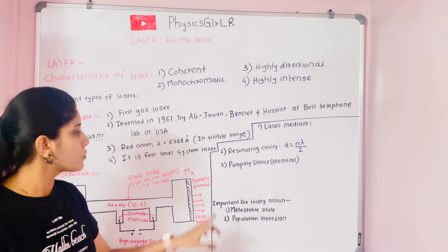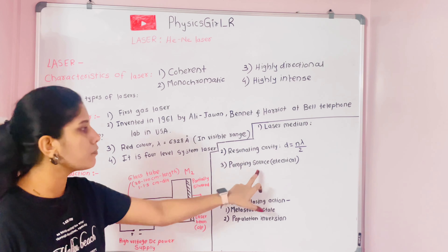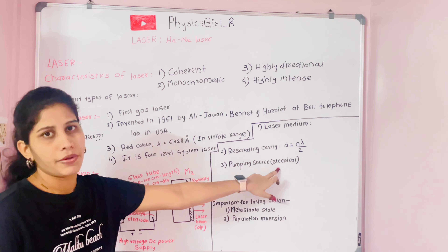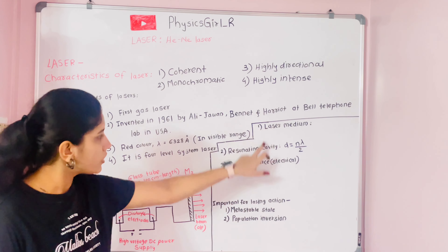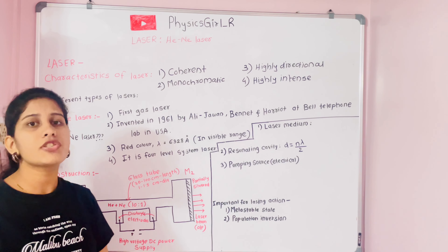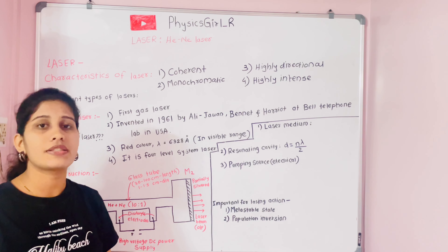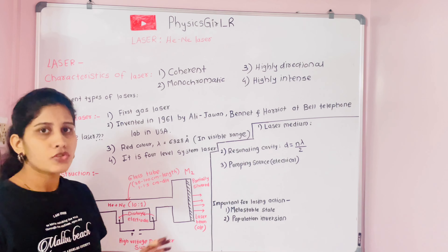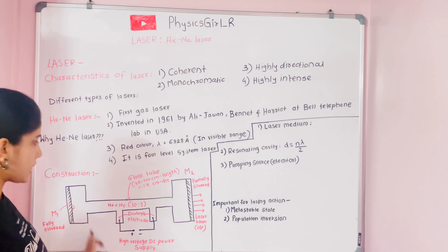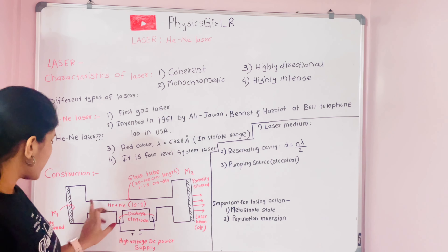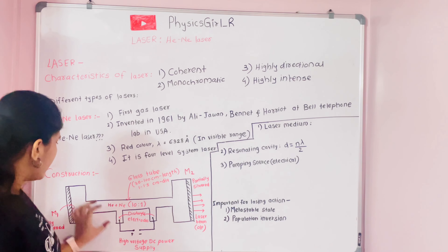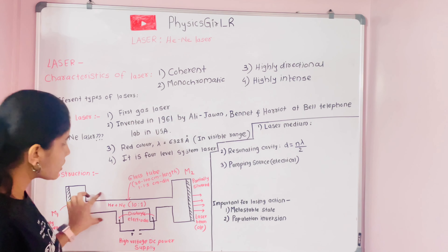Now we will discuss the working principle and construction of the helium-neon laser. The construction is divided into three main parts: the laser medium, the resonating cavity, and the pumping source. The pumping used is electrical pumping.